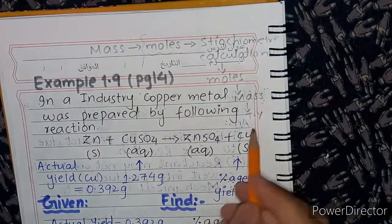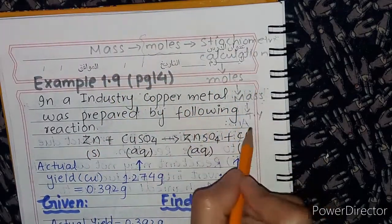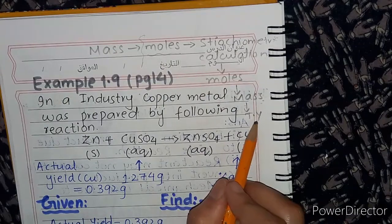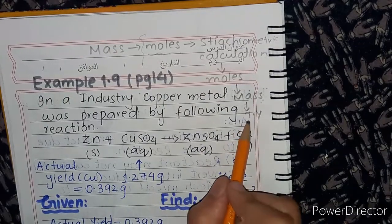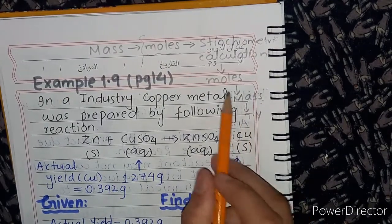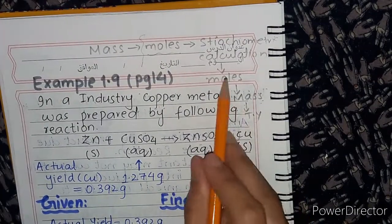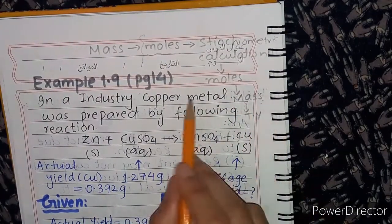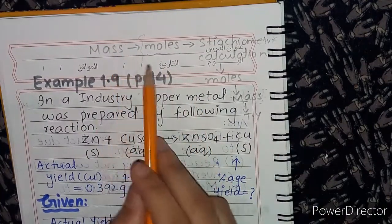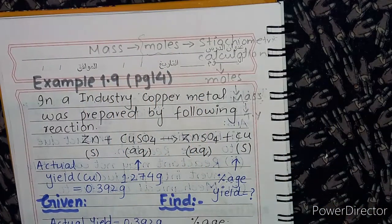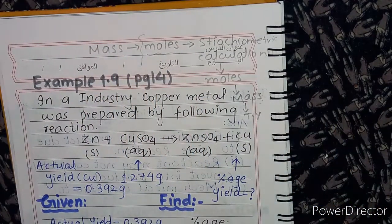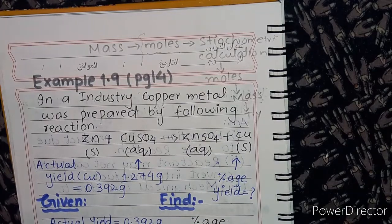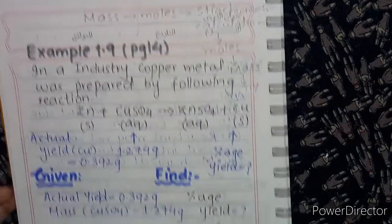So now we will find the theoretical yield. If mass is given, we use: moles = mass divided by molar mass. Now we will go to the solution.